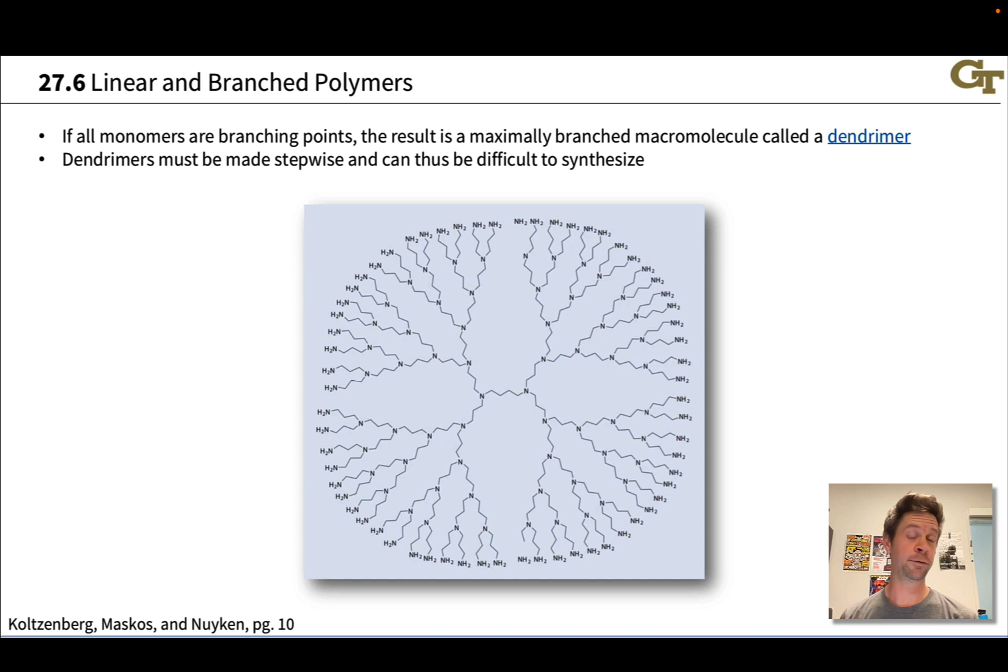Another extreme in terms of branching is the situation where we eliminate the difunctional monomers entirely and include only trifunctional monomers, only branching points. In this situation, all the monomers are branching points, and this is a maximally branched macromolecule or polymer called a dendrimer. The dendry prefix evokes the idea of a tree, and these are branched like trees. They have a fractal-like structure where the large-scale appearance of the macromolecule resembles the small-scale appearance since it branches all the way down.